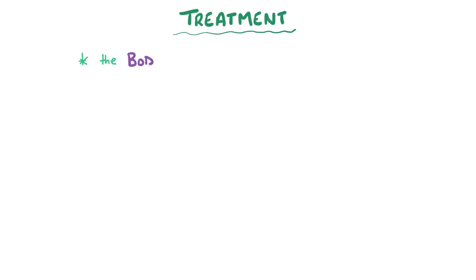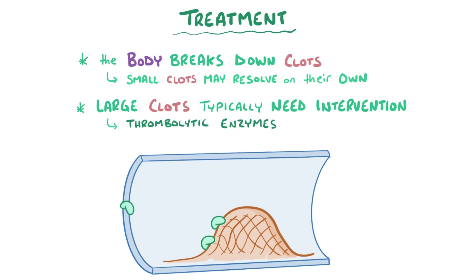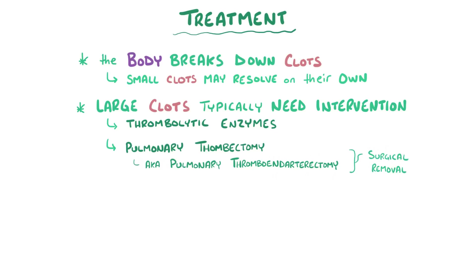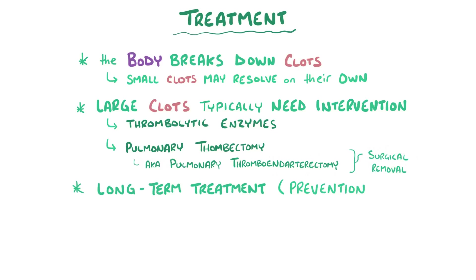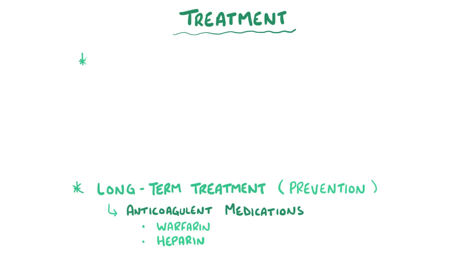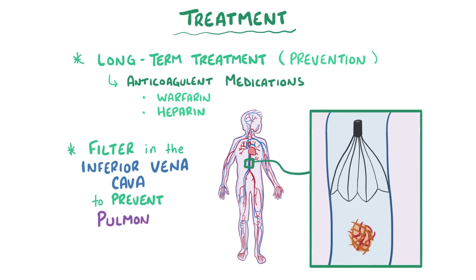Generally speaking, the body makes and breaks blood clots all the time, and some small clots resolve on their own, but large clots that cause symptoms typically need an intervention. Thrombolytic enzymes can be given to help break down the clot, or a pulmonary thrombectomy, also known as pulmonary thromboendarterectomy, can be done to surgically remove the clot. Long-term treatment to prevent future thrombi from forming can include anticoagulant medications like warfarin or heparin, which inhibit the clotting cascade and prevent clot formation. Also, a filter can be surgically placed in the inferior vena cava to prevent pulmonary embolisms.